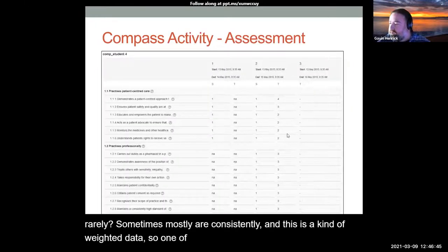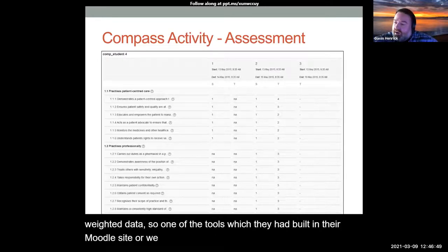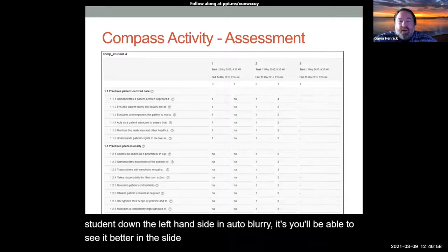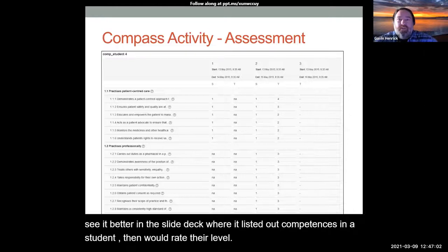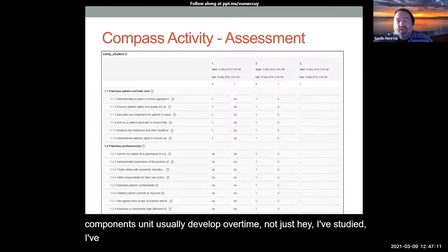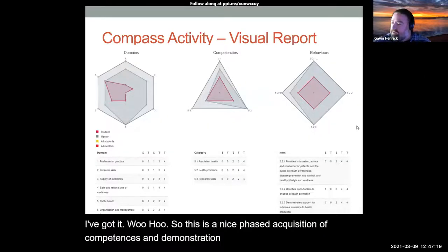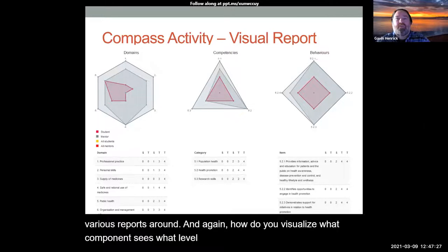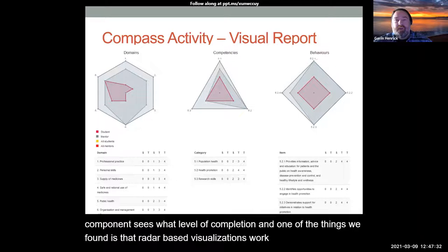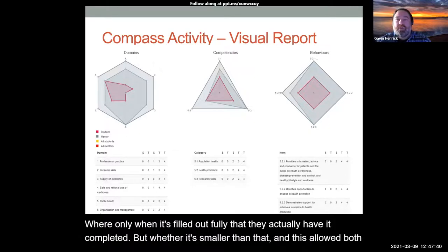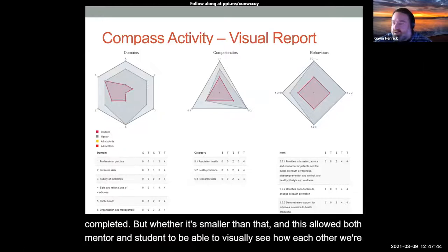One of the tools built in their Moodle site was this compass activity, where a student on the left-hand side - and I know it's a bit blurry, you'll see it better in the slide deck - had competencies listed out, and a student would rate their level, and their workplace assessor or mentor would also rate them. They would do this in multiple phases throughout the year, because a competency is something that usually develops over time. So this is a nice phased acquisition and demonstration of competencies. There were various reports around that, and one of the things we found is that radar-based visualizations work really well - where only when it's filled out fully have they completed it. This allowed both mentor and student to visually see how each other are doing, and it was interactive so they could click into the different domains.